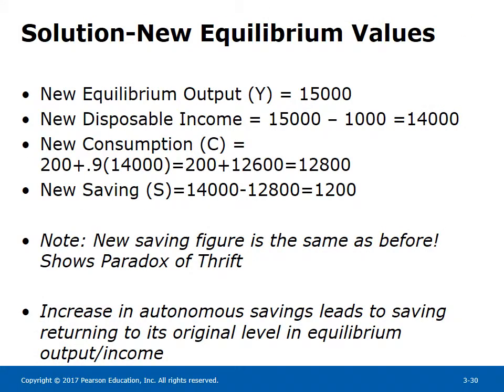New equilibrium values: new equilibrium output Y equals 15,000. New disposable income equals 15,000 minus 1,000 equals 14,000. New consumption C equals 200 plus 0.9 times 14,000 equals 200 plus 12,600 equals 12,800. New saving S equals 14,000 minus 12,800 equals 1,200. The new saving figure is the same as before, illustrating the paradox of thrift: an increase in autonomous savings leads to saving returning to its original level in equilibrium.